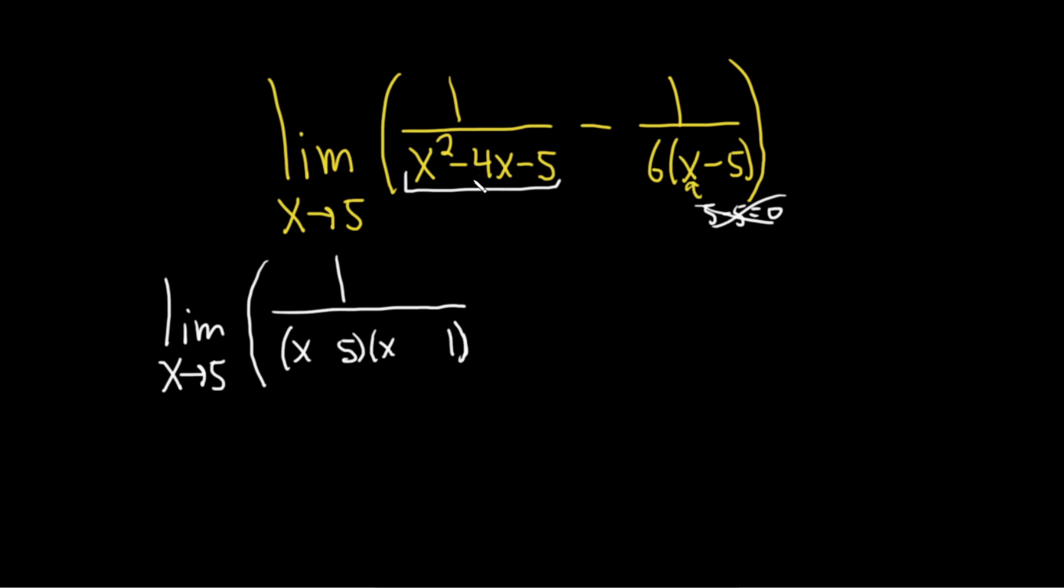So I'm going to put a 5 here and a 1 here. And since the negative 4 is negative, the bigger one should be negative. Now, let's check this. So this is a good guess. Negative 5 times 1 is negative 5. But we need to check everything.